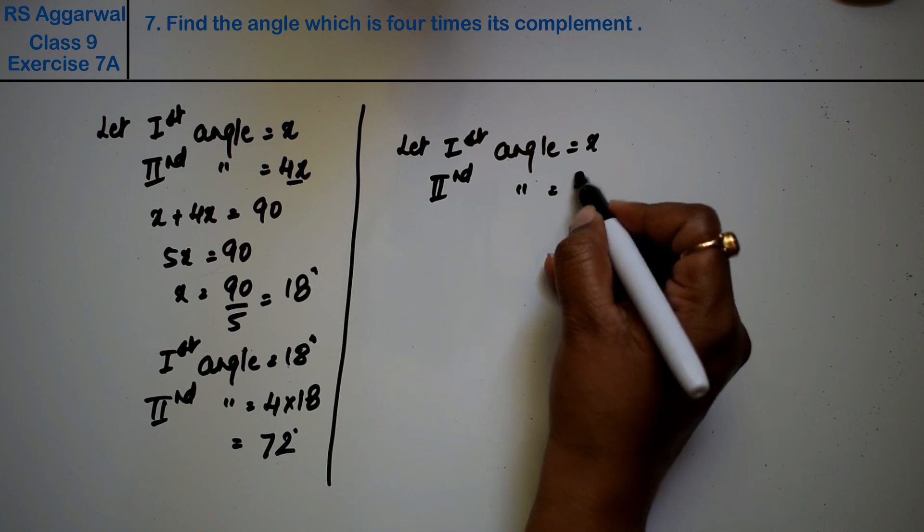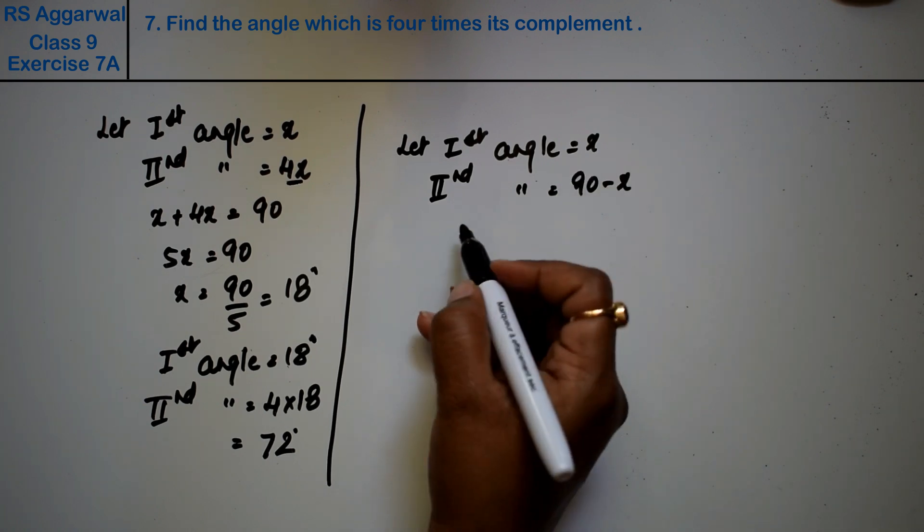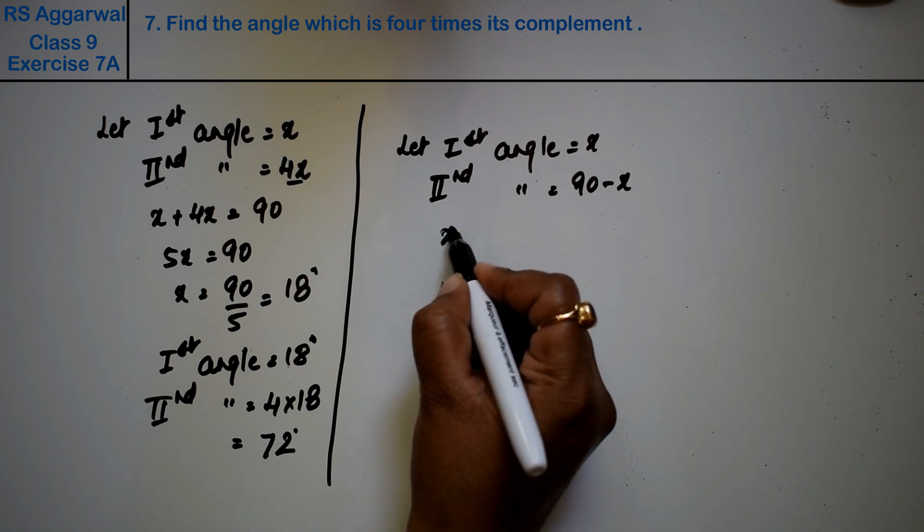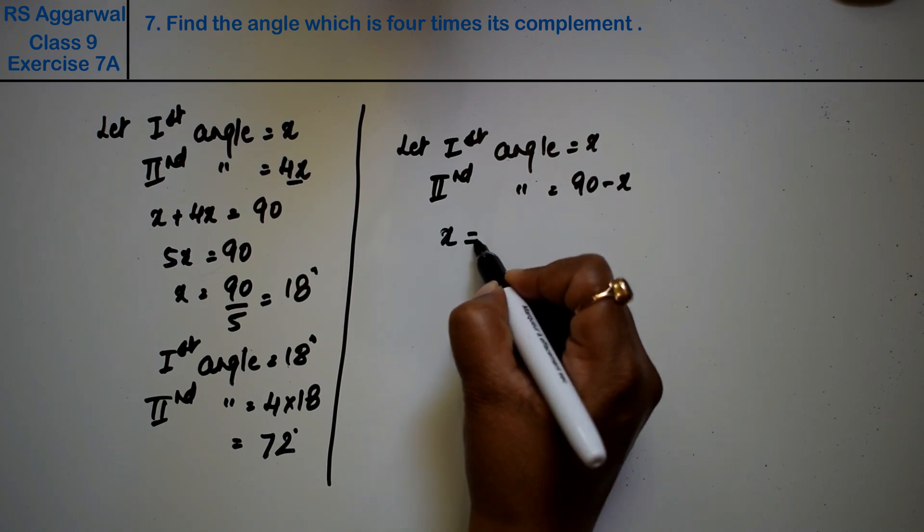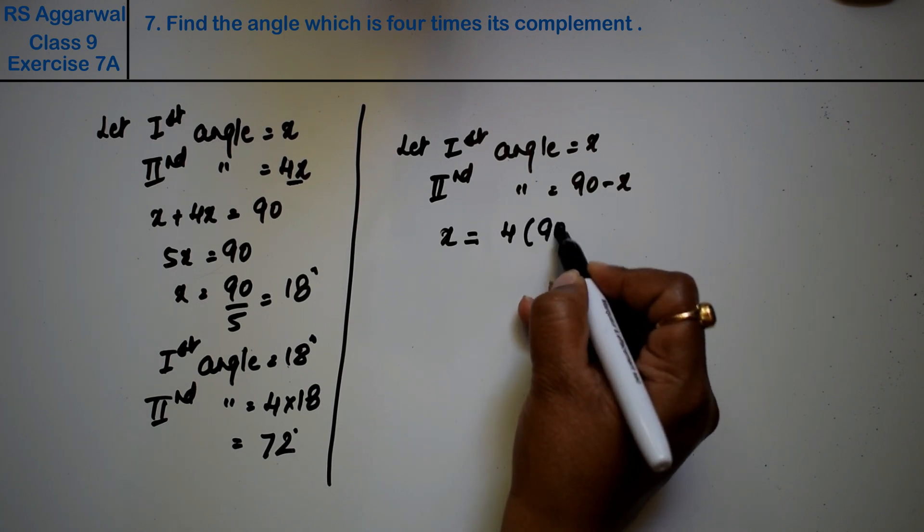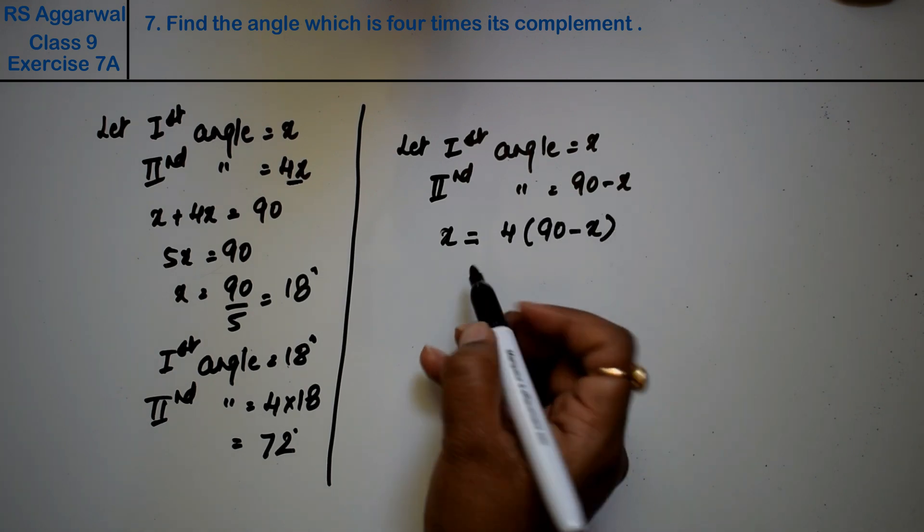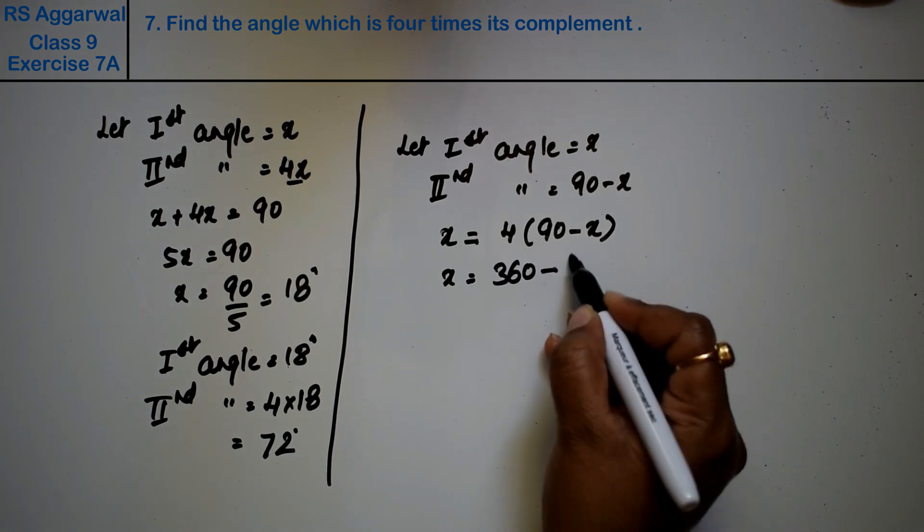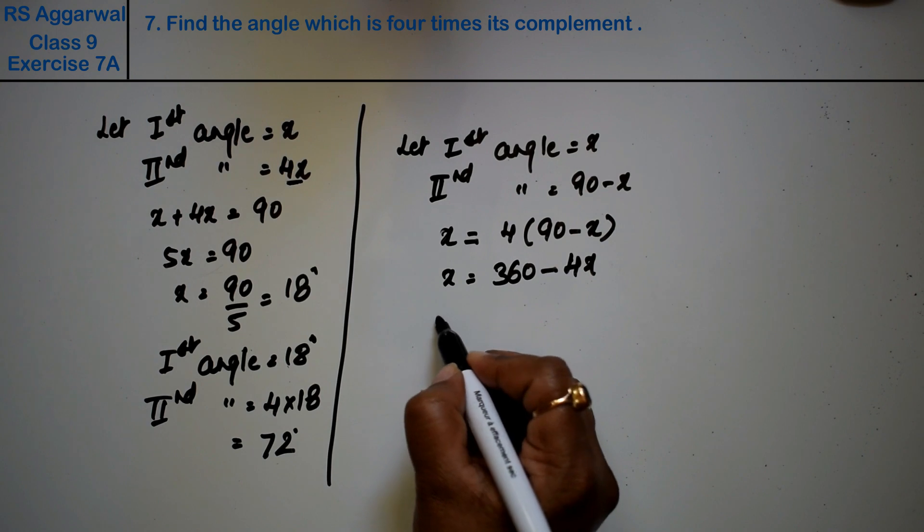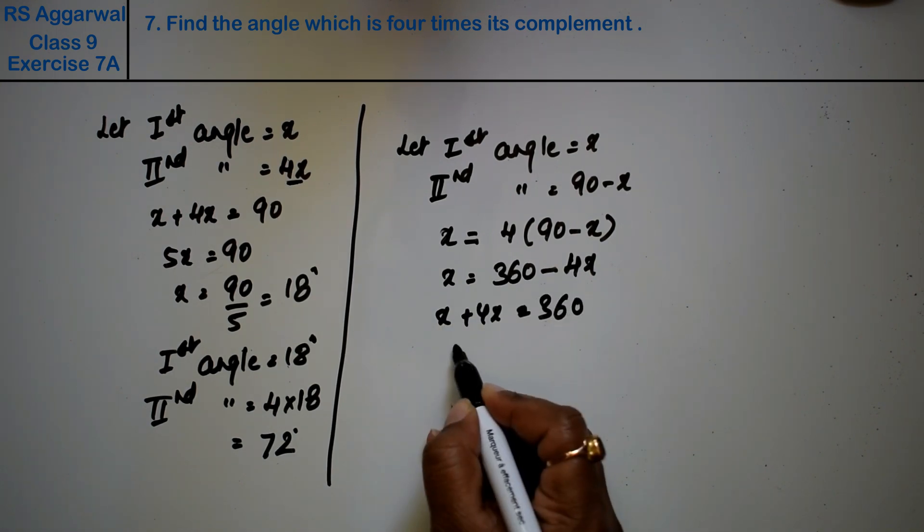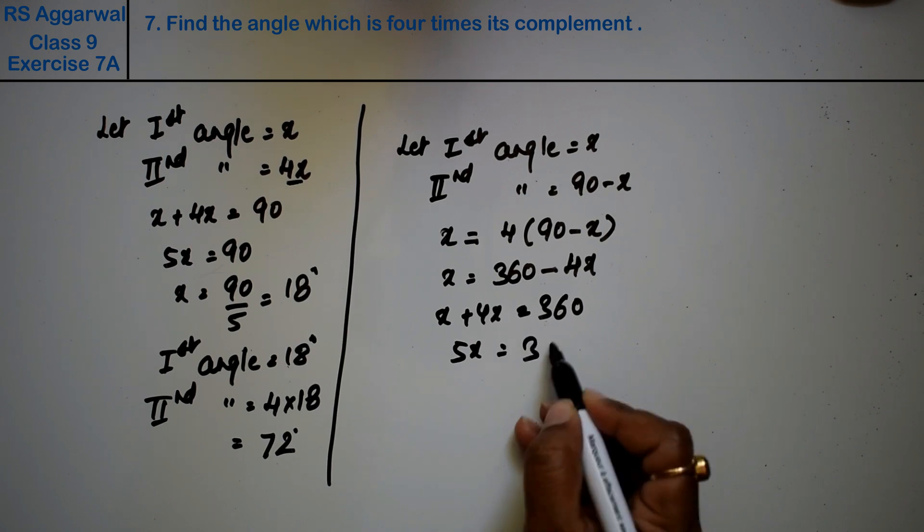What is our second complementary angle? Second angle is 90 minus x. So this is x plus 4x equals to 360. 5x equals to 360.